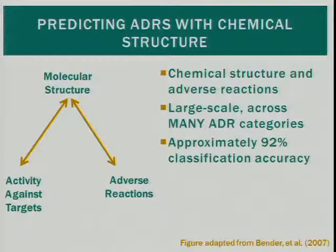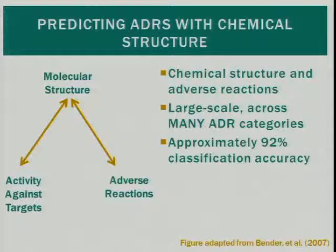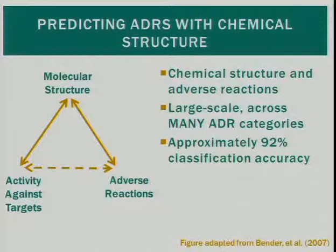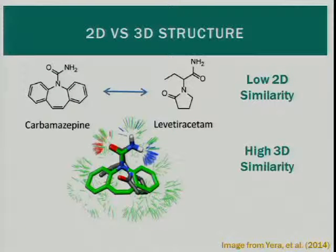One of the strongest examples of using chemical structure to predict adverse drug reactions was Bender et al. in 2007. This was the most large-scale study to date — they wanted to see whether you could use chemical structure to predict ADRs across many drug classes and many reaction classes. They created two models: one relating chemical structure to activity against targets, another relating chemical structure to adverse reactions, then bridged the two. When classifying off targets as related to known adverse events, they achieved about 90 to 92 percent accuracy.